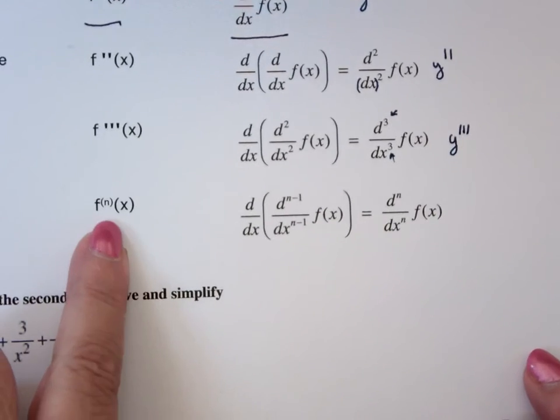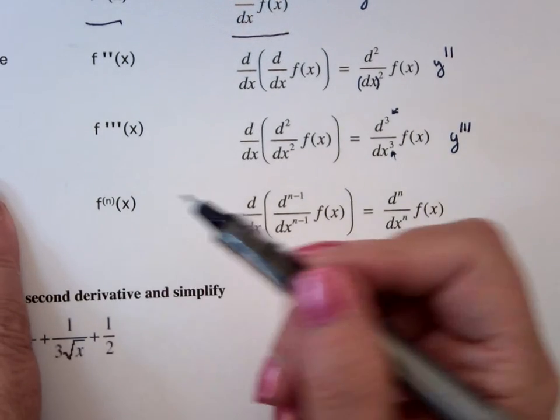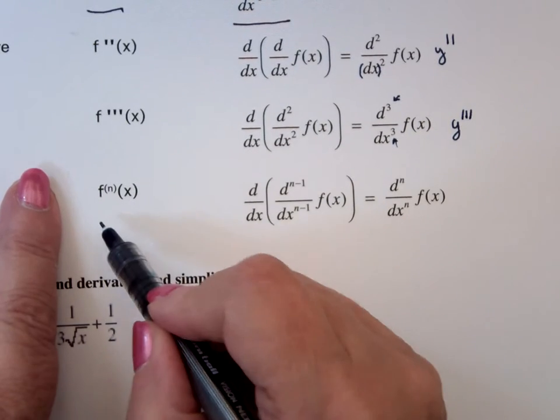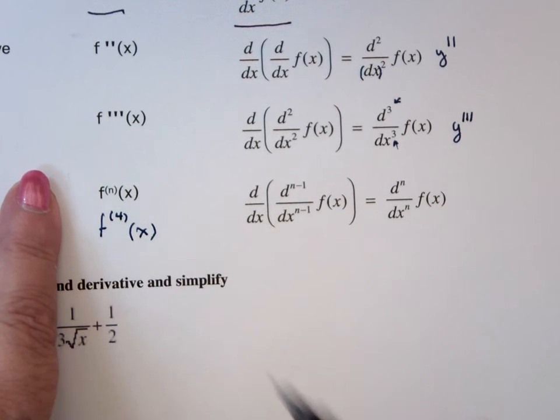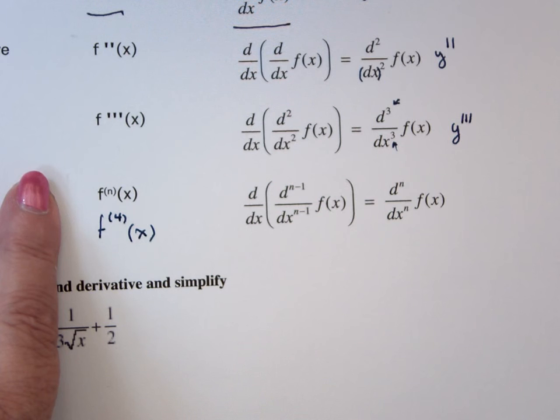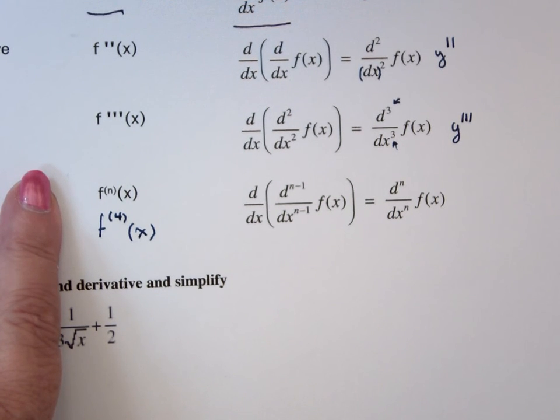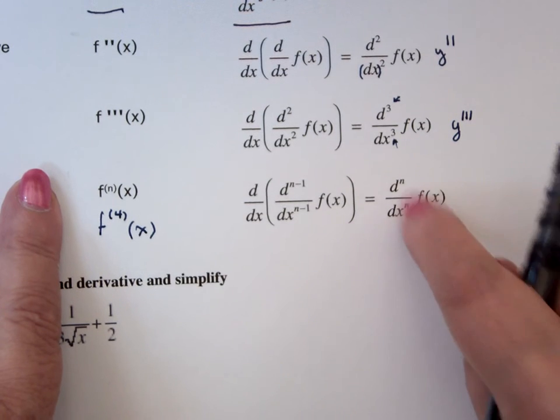You can do any derivative. N would be a number. So if I were going to do the fourth derivative, this would be f to the 4 of x. Sometimes you'll see them as Roman numerals. Instead, we tend to use regular numbers, and those would be fours.